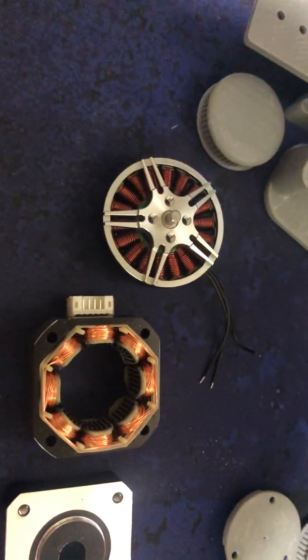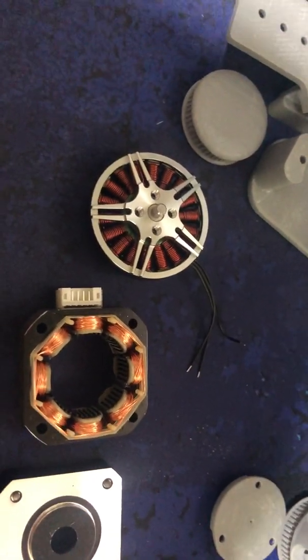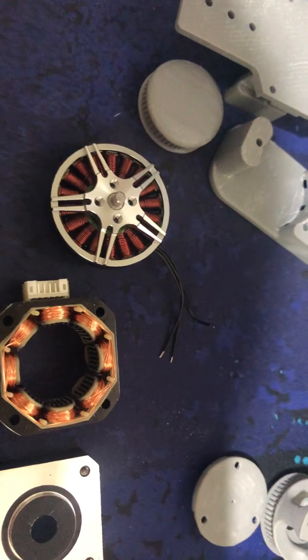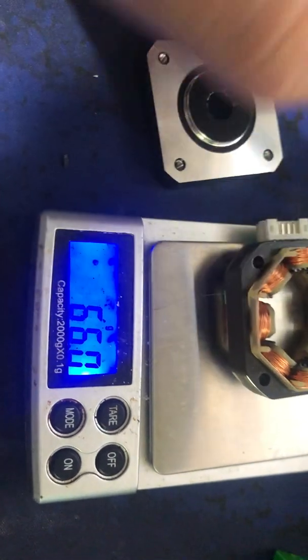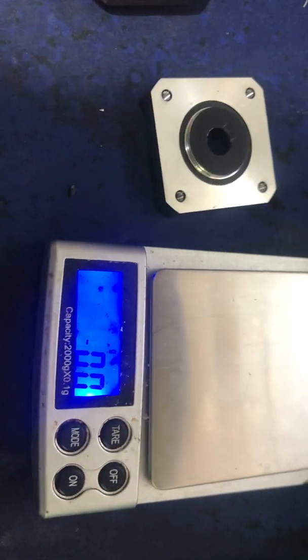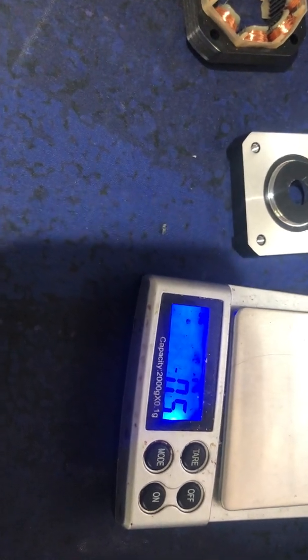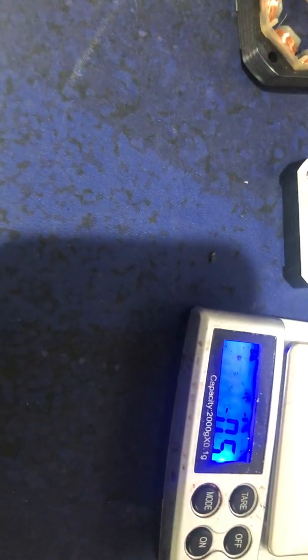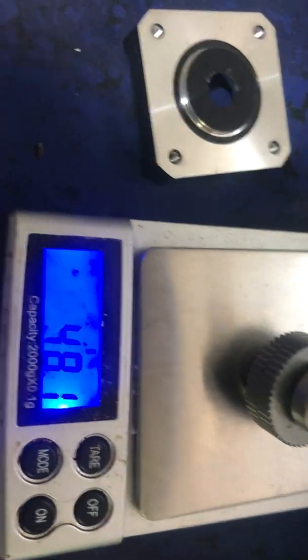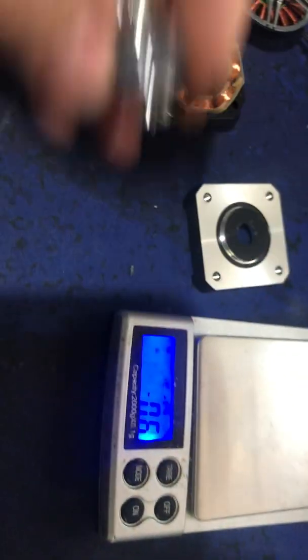So we should have much more torque, much more RPM, and be considerably lighter, being the fact that even just the coil of the NEMA 17 is more than the new BLDC. And the core of it is almost the same weight. So we're reducing a lot of weight.